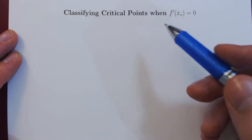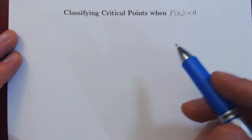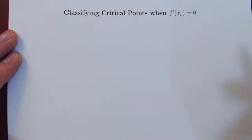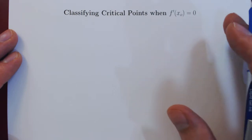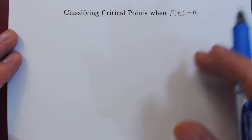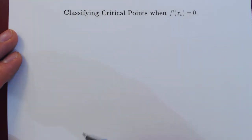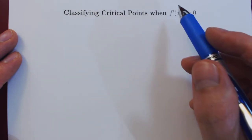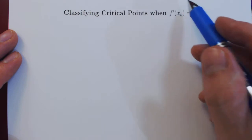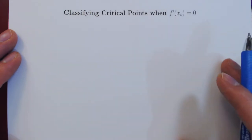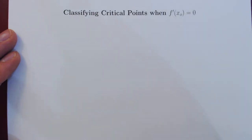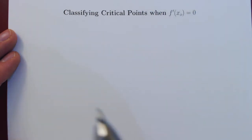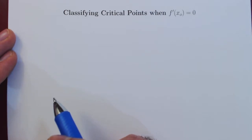We know that there is a second type of critical points where the derivative could be undefined, but those are a little bit more tricky, so we will look at them through examples. The first type of critical points where the derivative at the point is zero are fairly easy to figure out, and as we're about to see there are four possibilities — the first two very simple, the other two a little bit more interesting, but also fairly simple.